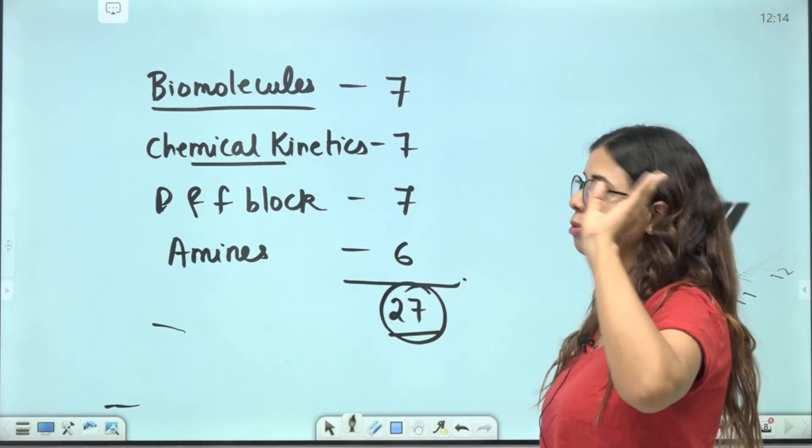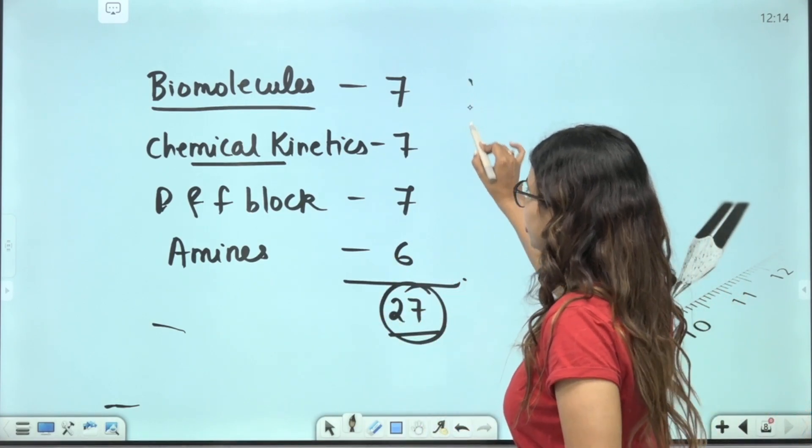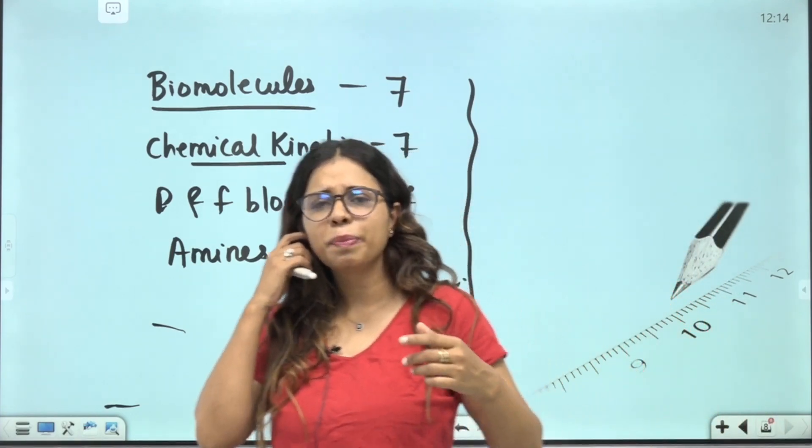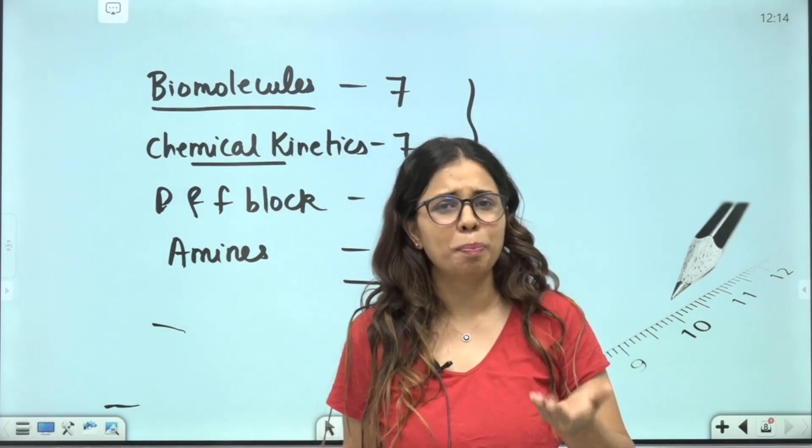So this is your target. Biomolecules, chemical kinetics, DNF block and Amines chapter. Very good. You will get 27 marks. If you also take 23 marks from other places, you are going to pass.